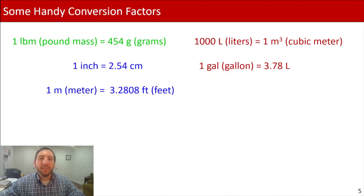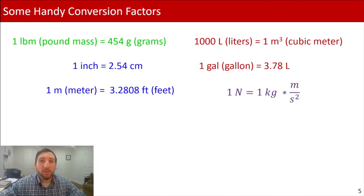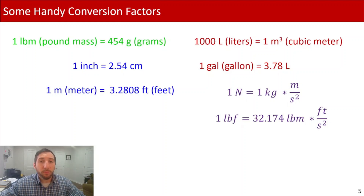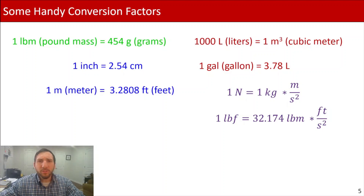In addition to those simple conversion factors, there are a couple that are a little more complex and deal with force. For example, one Newton equals one kilogram times meter per second squared. And one pound force equals 32.174 pound mass times foot per second squared. These force units are most commonly encountered when dealing with weight, because a lot of the time we're dealing with Earth's gravity.